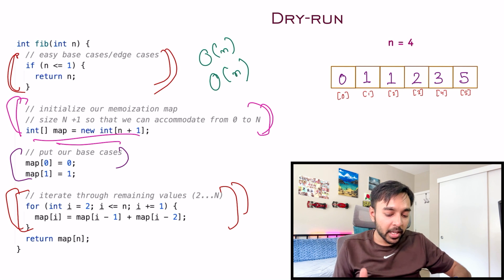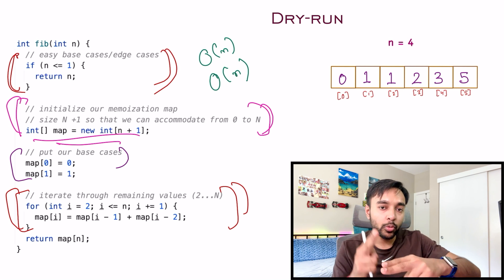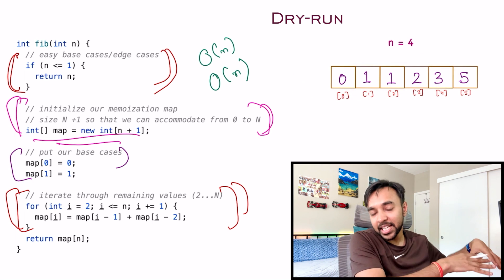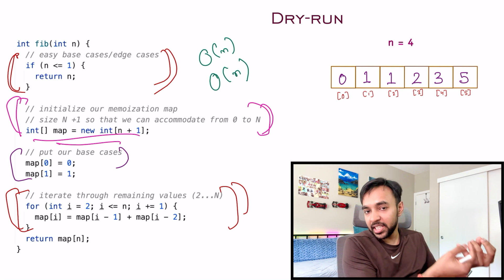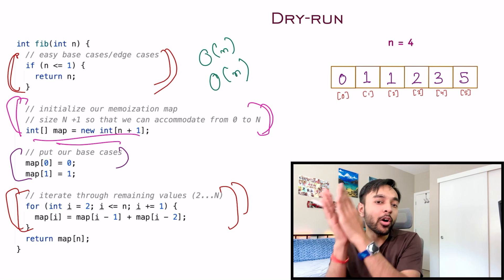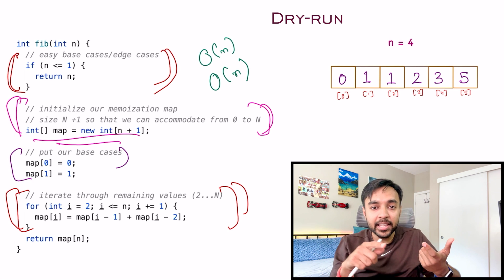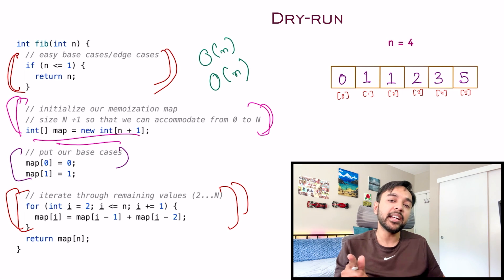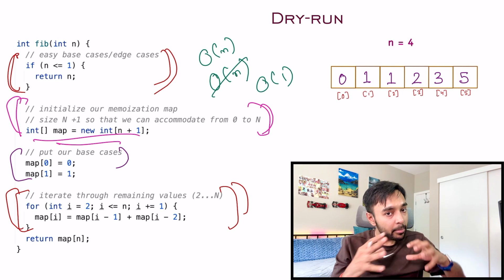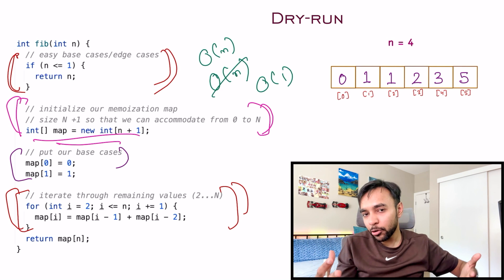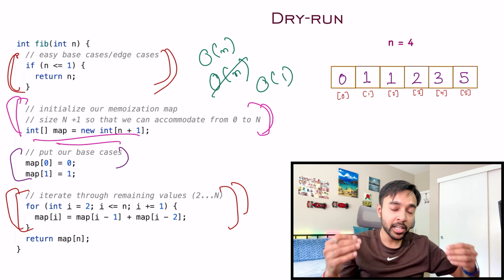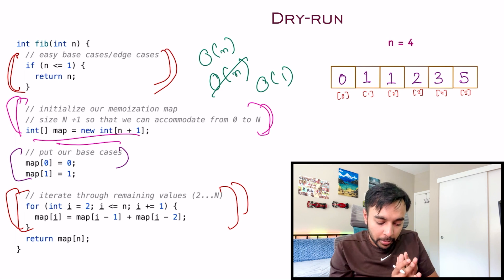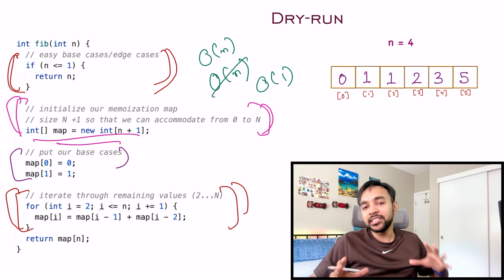Once this loop completes, you simply return map(n) and this is your answer. The time complexity of this solution is order of n because you're populating your memoized map that has length n. The space complexity is also order of n because you're storing all results. However, if you only need to find one Fibonacci number, you don't need to store all numbers - just store the last two in temporary variables. In that condition, space complexity changes to order of 1, though time complexity remains order of n.